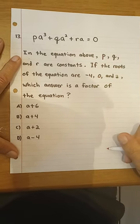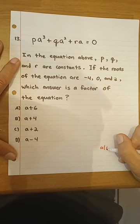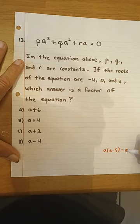Let's say that you had, just inventing here, a times (a - 5) = 0, okay?